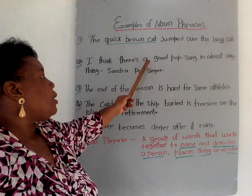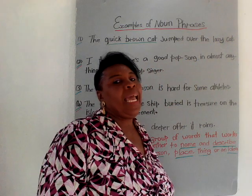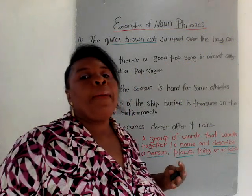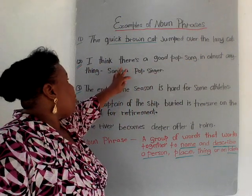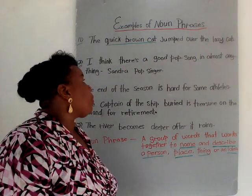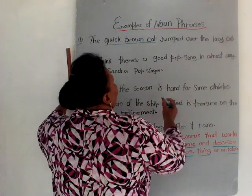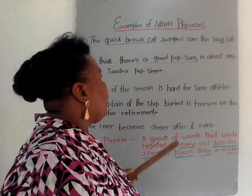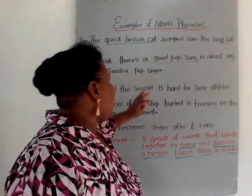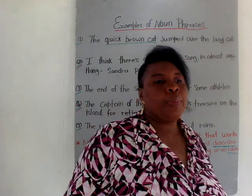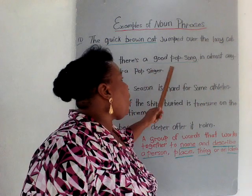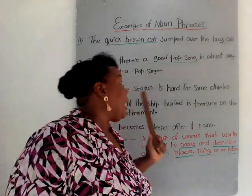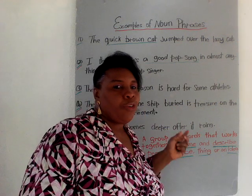The next example: 'I think there's a good pop song in almost anything' — Sandra, a pop singer, said that. So we look at 'a good pop song.' 'Song' or 'pop song' would be the noun, and 'good' is describing it. So 'a good pop song' is the noun phrase in that sentence.